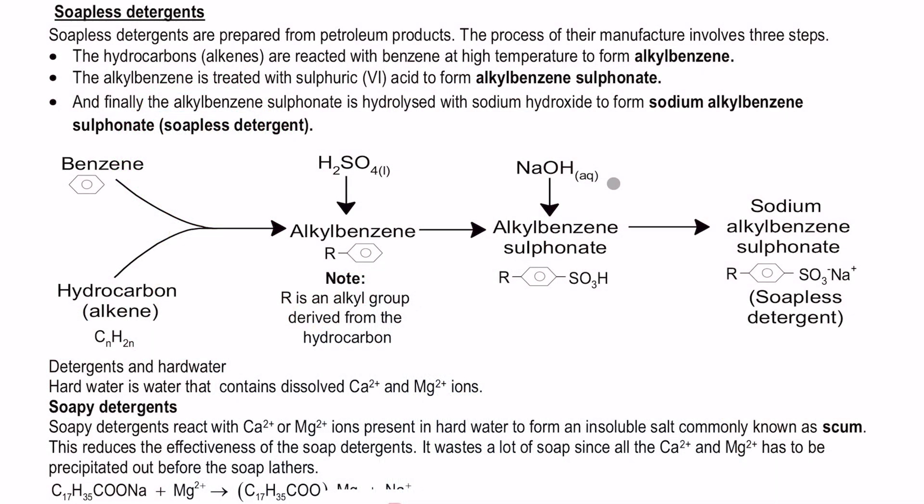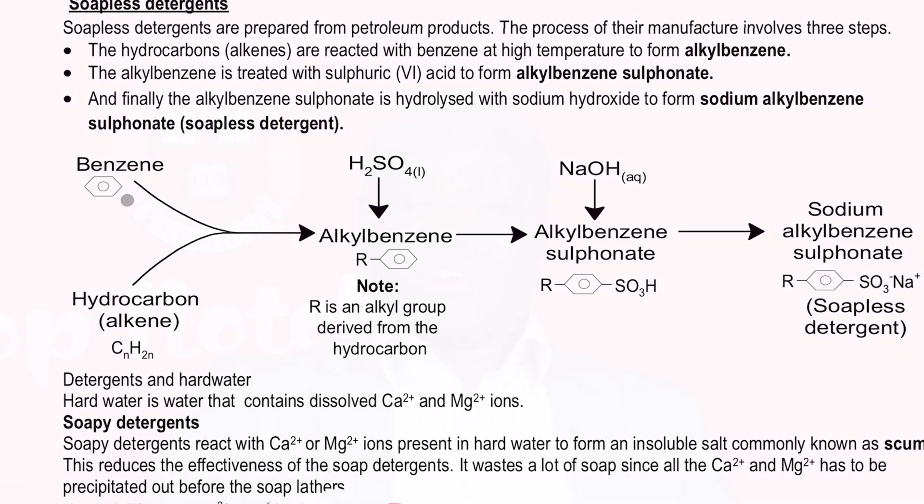The process of manufacture involves three steps. First, the hydrocarbon, which is an alkane, is reacted with benzene at very high temperatures to form a compound called alkyl benzene. In our syllabus you may not have been taught much about benzene. It is a compound which has a ring, as you can see on the structure on my screen. That structure is called a Kekulé structure — the benzene ring.